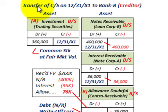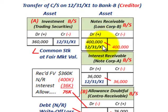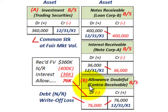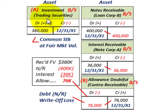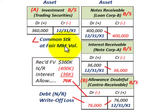On 12/31/X1, for the transfer of common stock to Bank B the creditor: Bank B will record the investment in the stocks they receive. Since Corporation A's stock is traded on an open market, it's classified as trading securities. Bank B debits trading securities for $360,000, recording the investment at the common stock's fair market value at the date of transfer.